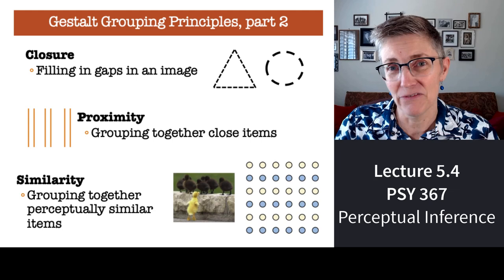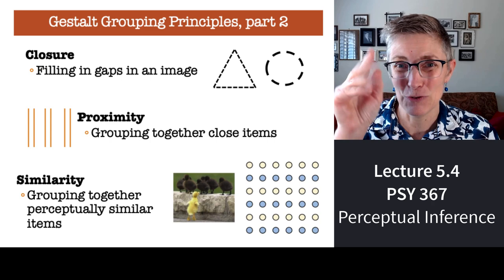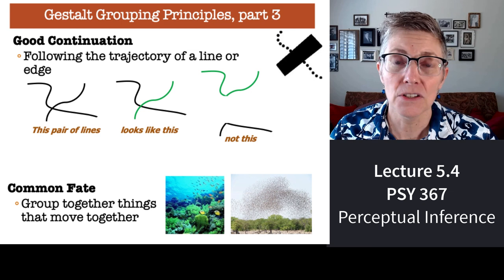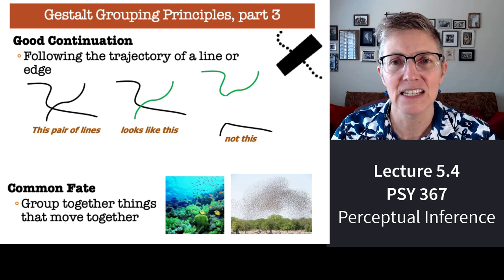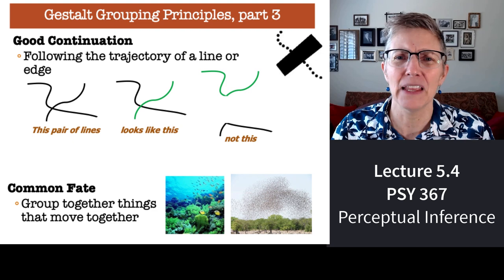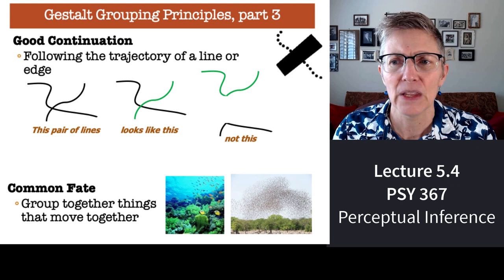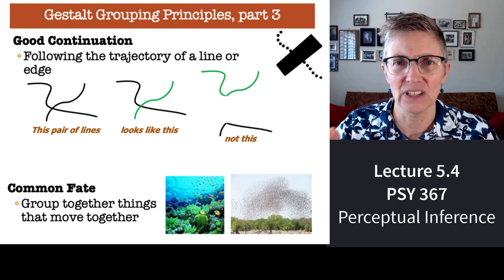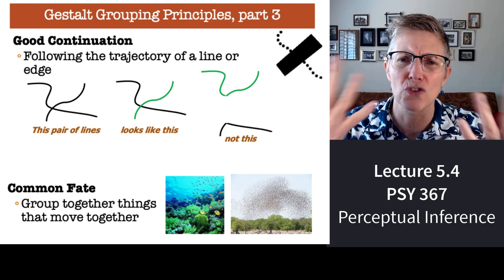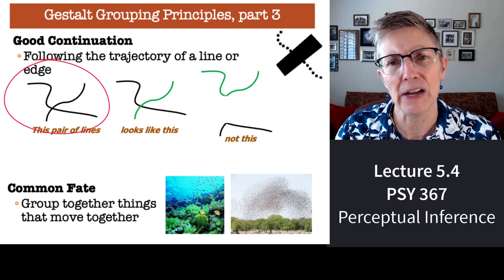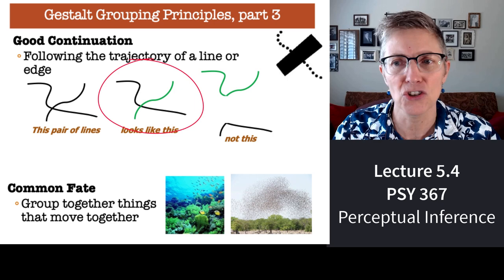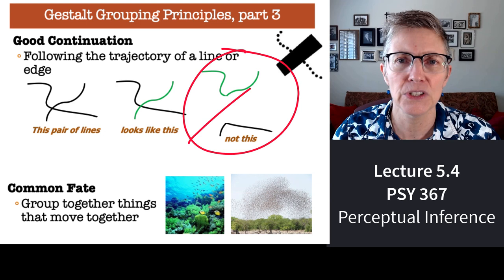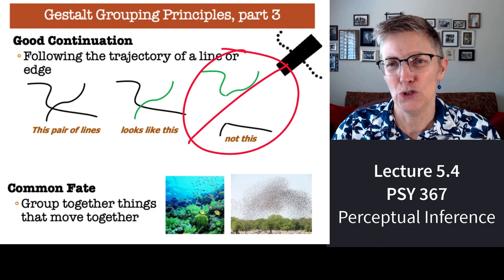You could also see vertical lines grouped by similarity — alternating yellow and blue. The Gestaltists argue that another rule is something they called good continuation: if something is partially occluded by something else, how do we figure out the shape of the occluded part? They argued that we tend to parse images so that line segments continue smoothly, without big corners or breaks in them. In the drawing shown here, there's a pair of overlapping lines — we see them as a pair of overlapping smooth, undulating lines. We tend not to interpret the stimulus as two sharp-cornered edges. That's good continuation.